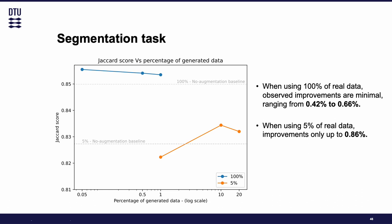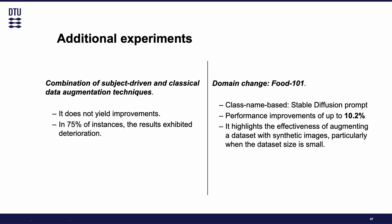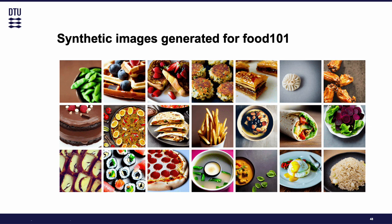We have also tested these approaches in other tasks such as segmentation. We utilize the Stable Diffusion prompt approach incorporating conditional control mechanisms based on segmentation maps. Subject-driven augmentation can be applied to a segmentation task and we saw some improvements. Nevertheless, we cannot say this is statistically significant, but subject-driven augmentation is definitely relevant beyond classification. We also ran experiments to see if combining subject-driven augmentations and classical data augmentation techniques yields any improvement — we found that they don't. Finally, we also tested the Food101 domain and highlight the effectiveness of augmenting a dataset with synthetic images, particularly when the dataset size is small.